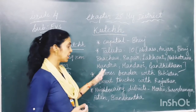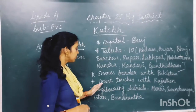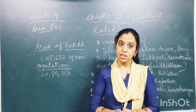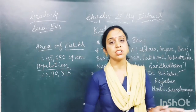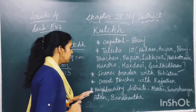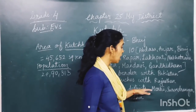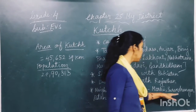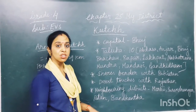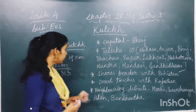Kutch shares its border with Pakistan, and the desert of Kutch touches Rajasthan. The neighboring districts of Kutch are Morbi, Surendra Nagar, Patan, and Banas Katha.